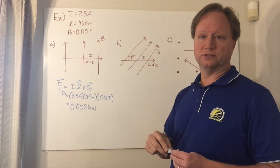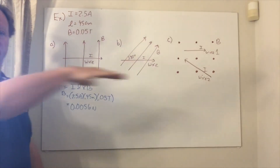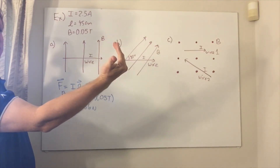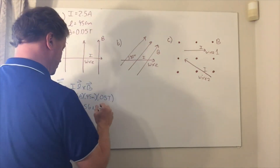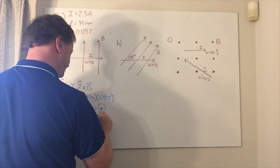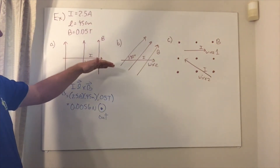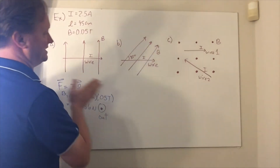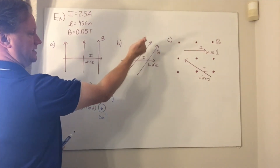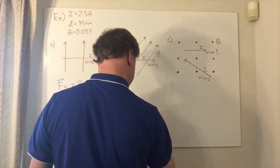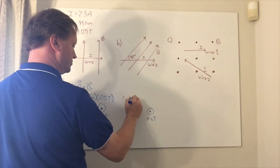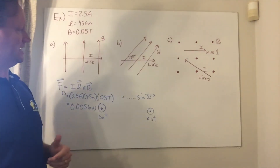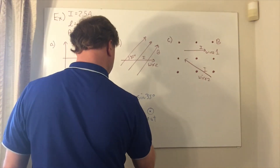By the right-hand rule, IL cross B: I point my fingers of my right hand in the direction of I, rotate my wrist so I can cross into B which is going upward — my thumb points out towards you, so that force comes out of the board. In part B, the math looks the same until you get to the angle. IL in this direction crossed into B, the direction is also out, but with a sine of 35 degrees for the angle between IL and B, giving 0.0032 newtons.